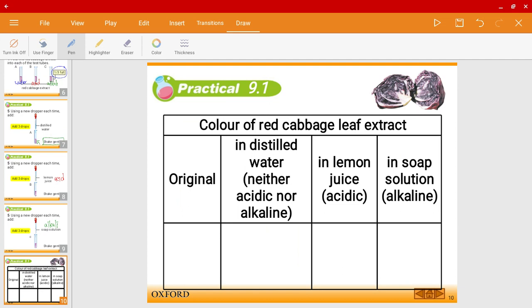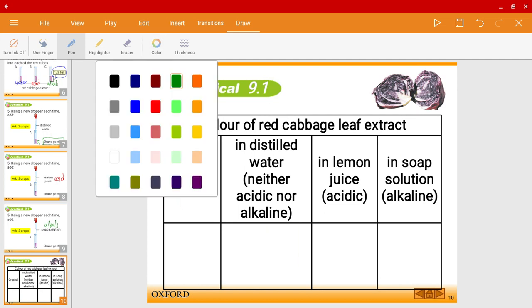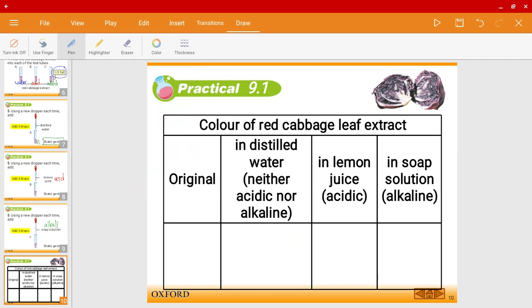Okay. So after we've mixed all three, let's have a look at the results. So the original color of the red cabbage, you can have a look at the picture on the top right. It is purple. Let me go ahead and write that down. Purple.